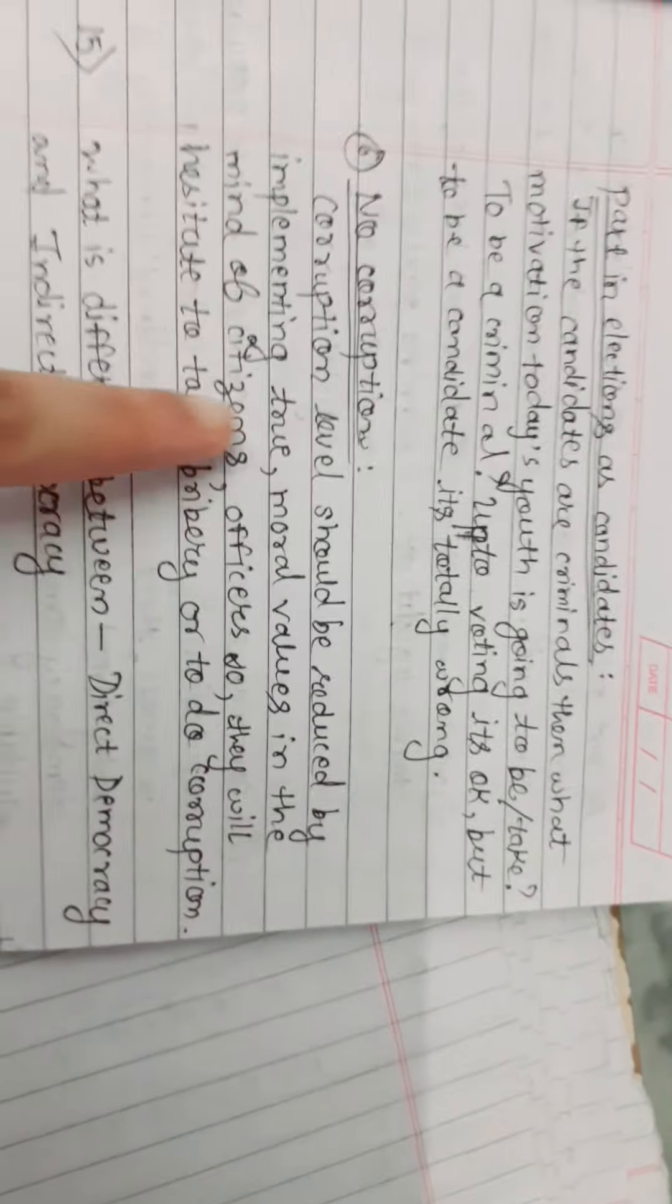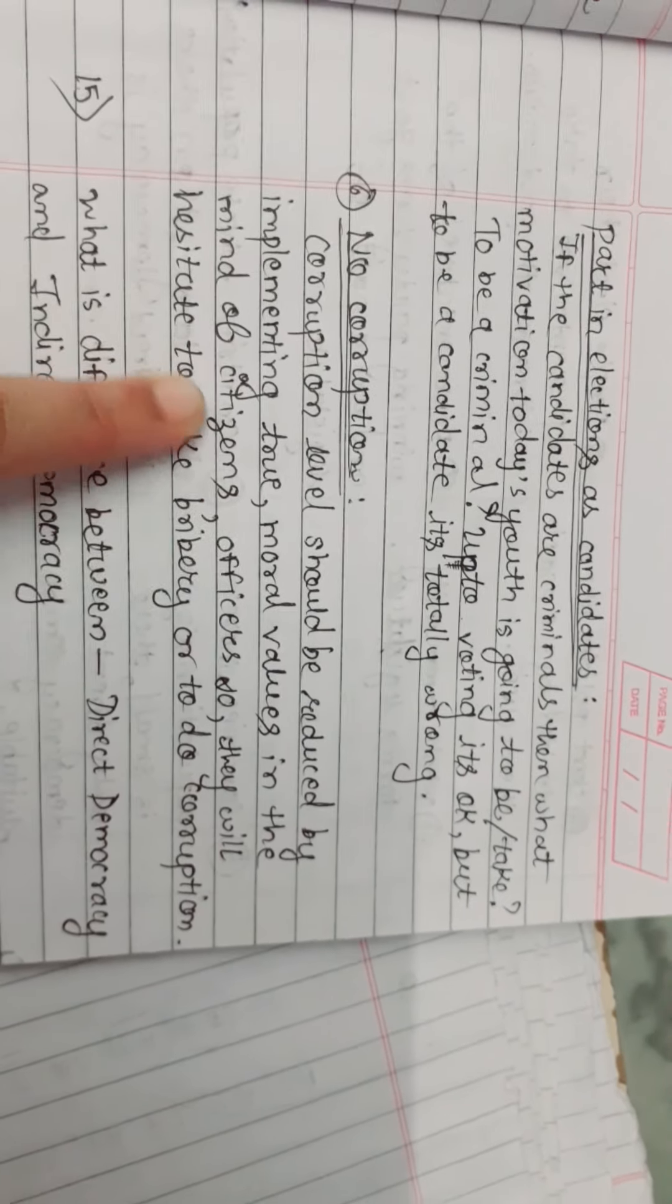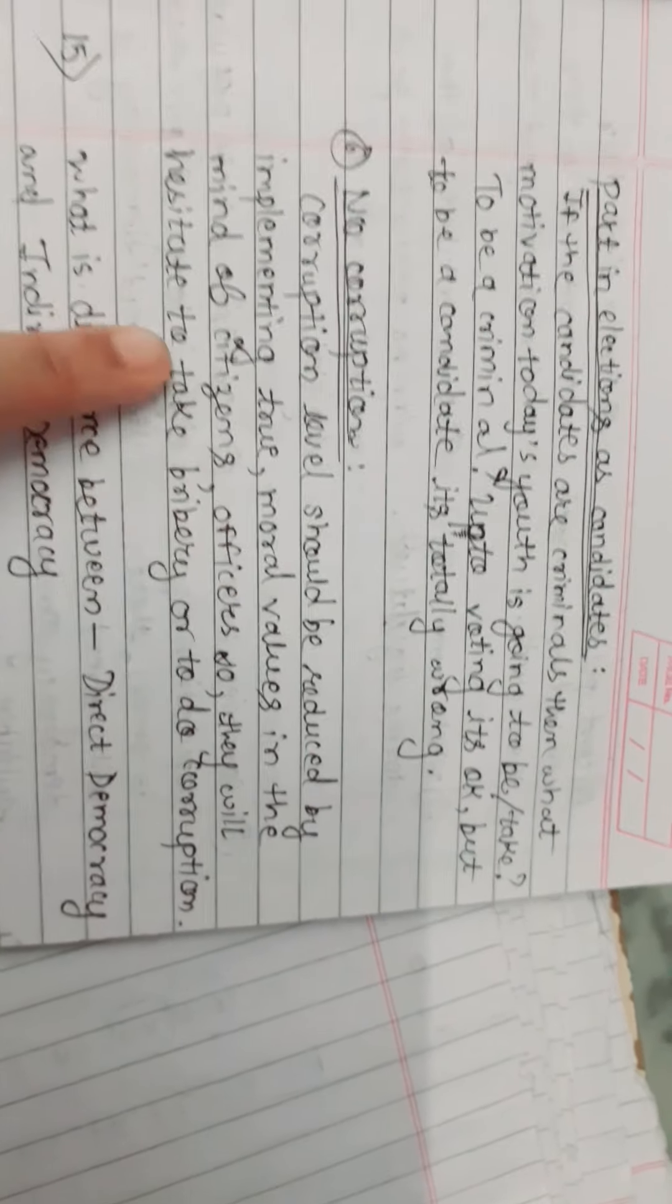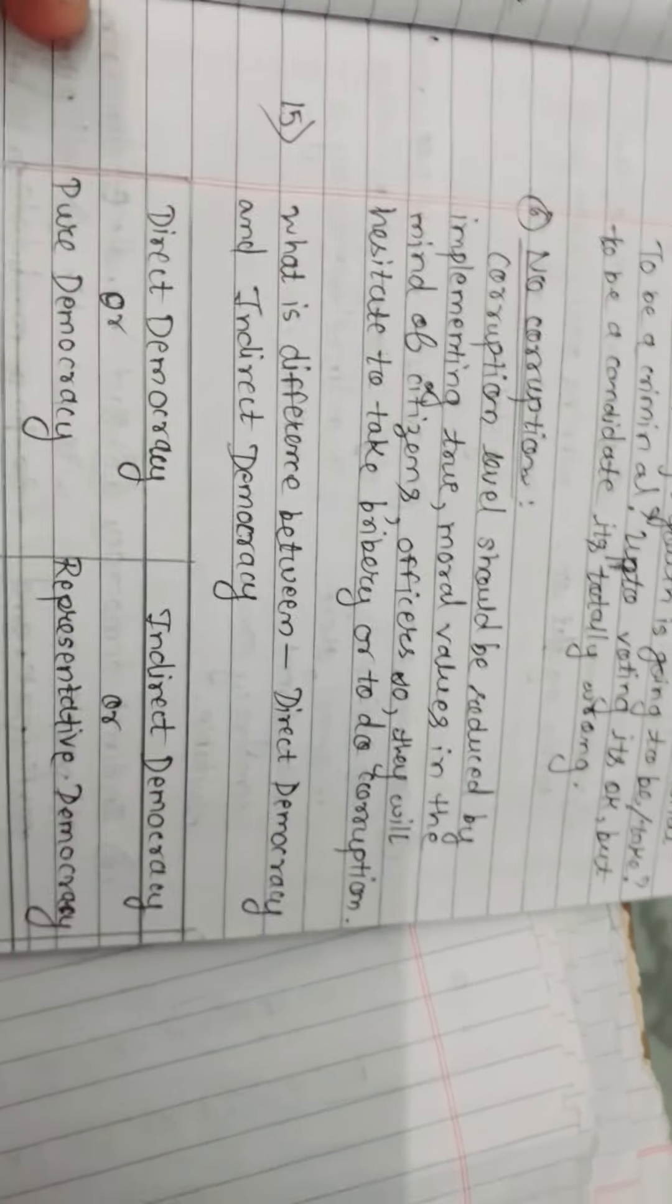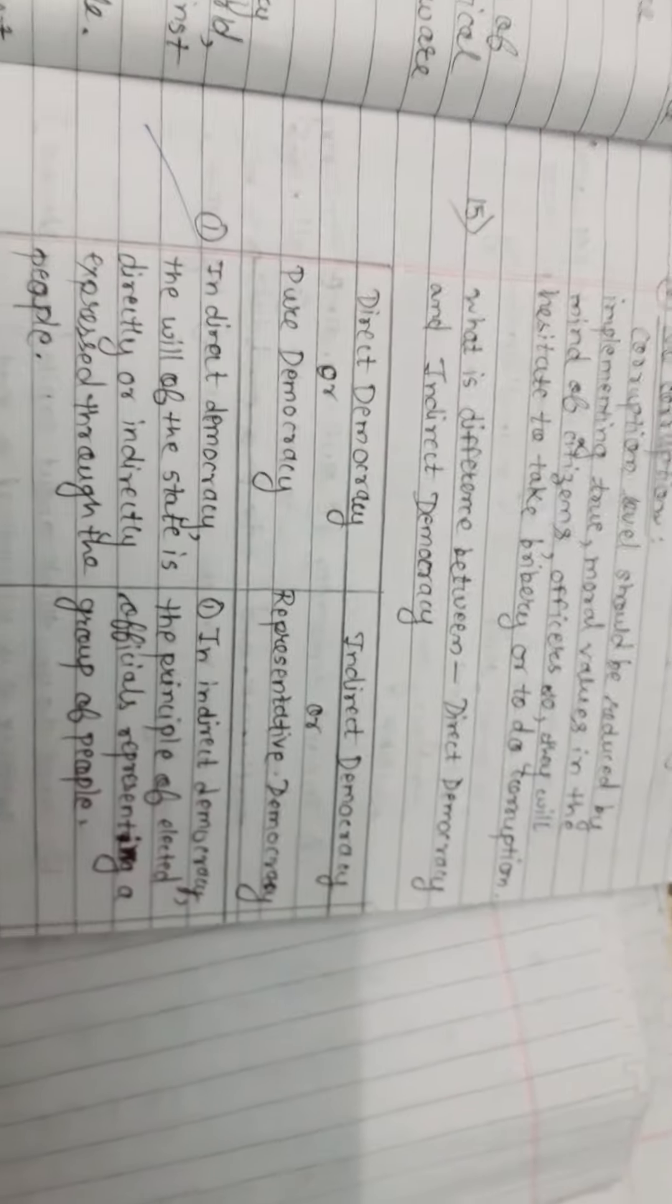Then no corruption. Corruption level should be reduced by implementing true moral values in the minds of citizens and officers, so they will hesitate to take bribery or do corruption. Next is the difference between direct and indirect democracy.